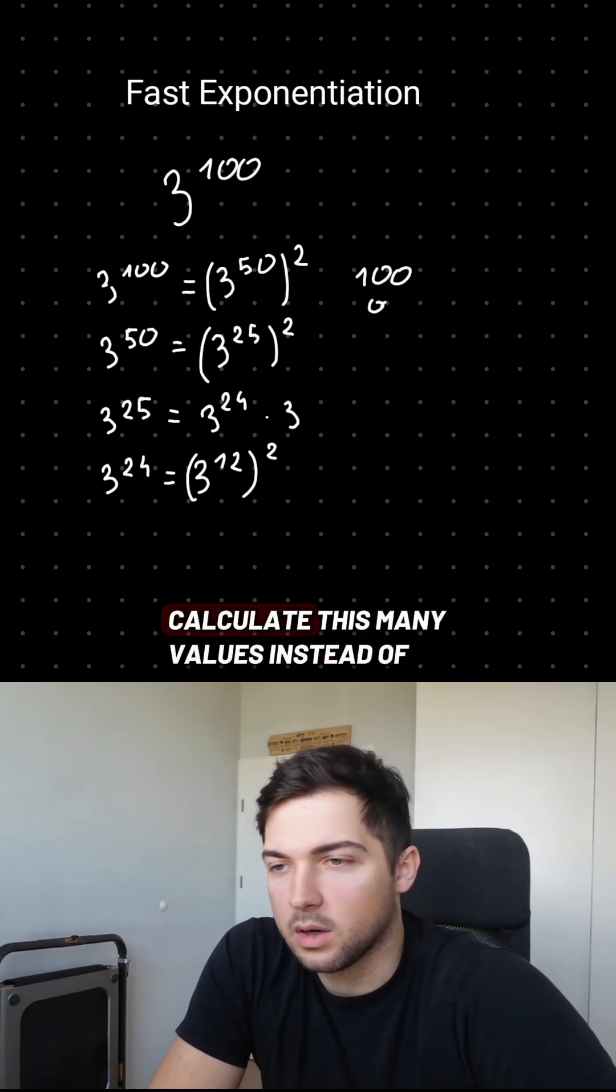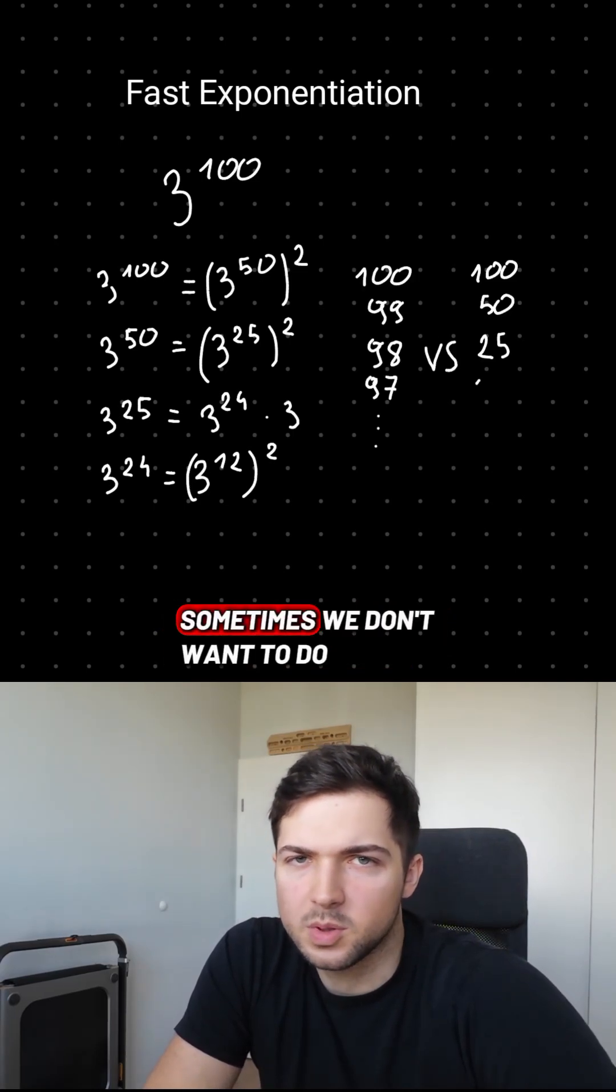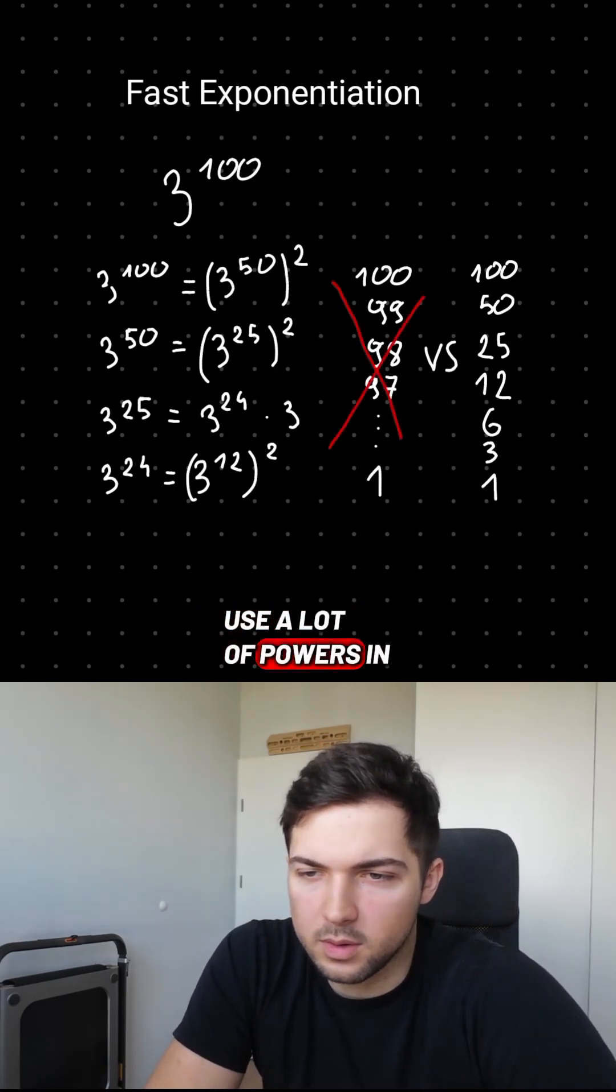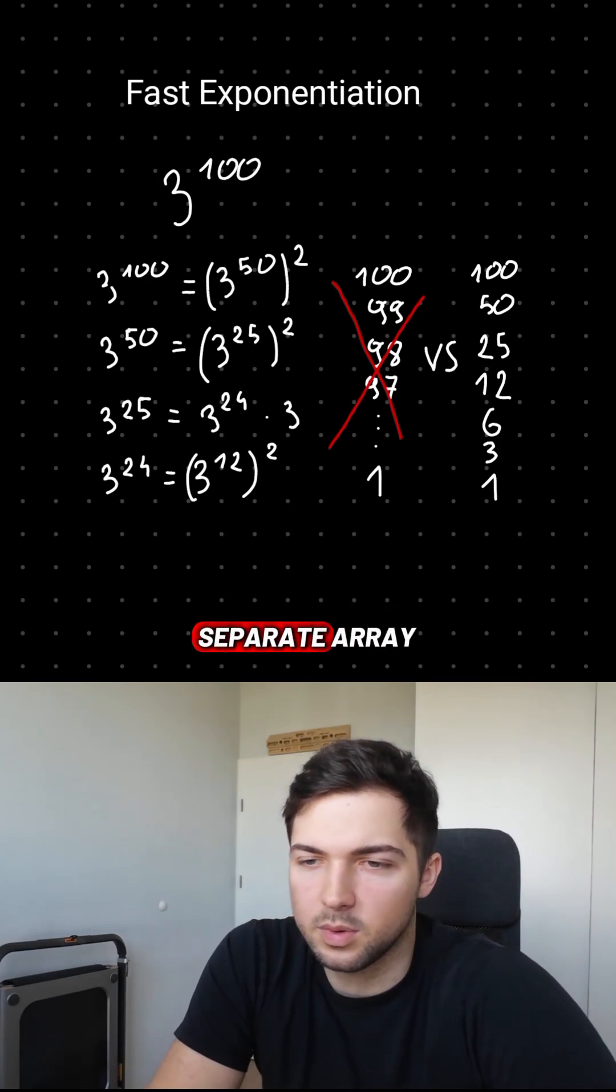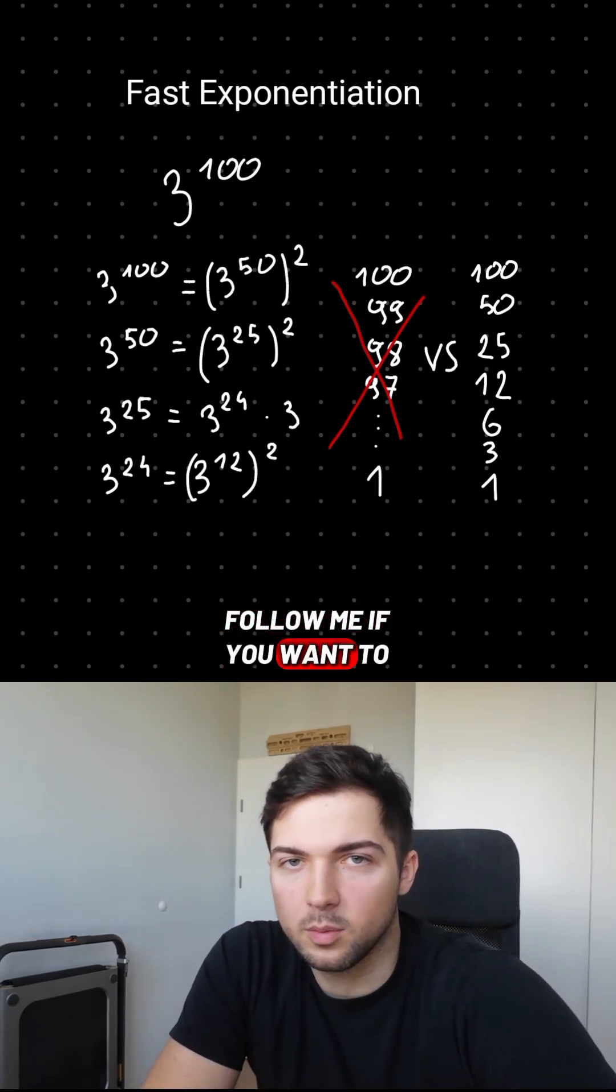In the end, we have to calculate this many values instead of 100. Sometimes we don't want to do that. For example, when we're going to use a lot of powers in our code, then it might be better just to store them all in a separate array instead of calculating them on the fly. Follow me if you want to max out your coding.